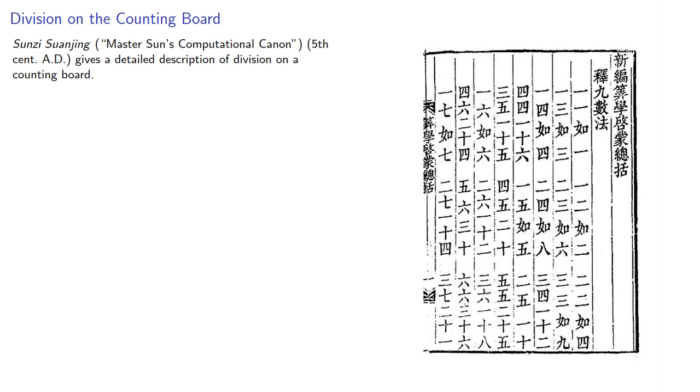The Sun Jisuanjing, Master Sun's Computational Canon, from the 5th century AD, gives a detailed description of division on a counting board.